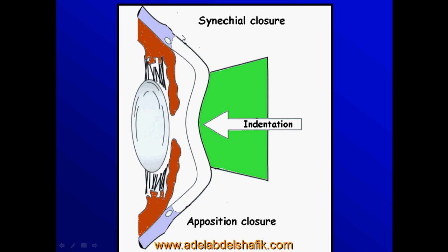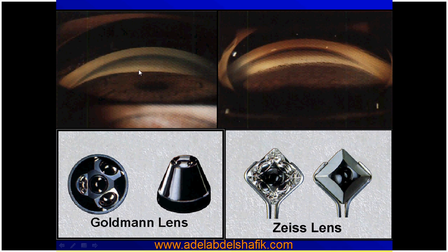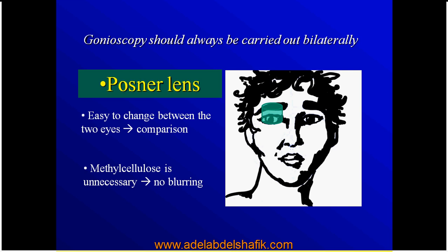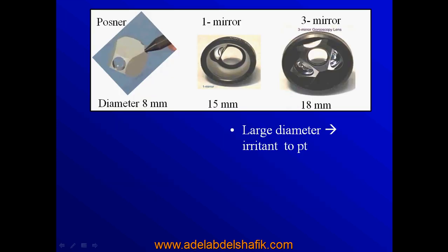This is the differential diagnosis between synechial and appositional closure of the angle using indentation. With the 3-mirror contact lens we cannot do any indentation because of the corneal diameter difference. When applying the Posner lens and performing indentation, the trabecular meshwork becomes apparent — confirming an actual case of appositional angle closure. Gonioscopy is usually done bilaterally. It is easy to use the Posner lens to switch between the two eyes, so comparison is quick, and since no viscous agent is used, there is no blurring of vision. The disadvantage of large-diameter lenses is that they cause patient irritation and make it difficult for the patient to move the eyes toward the direction of the mirror.